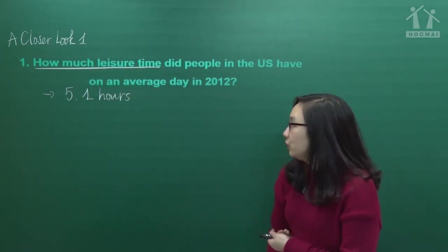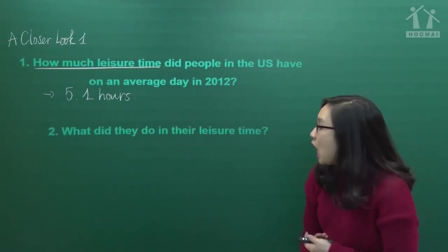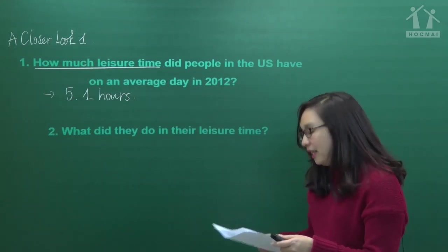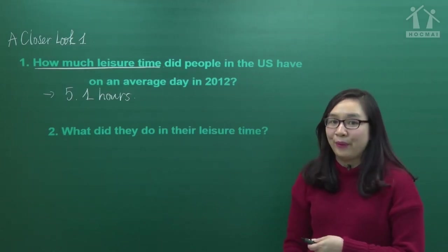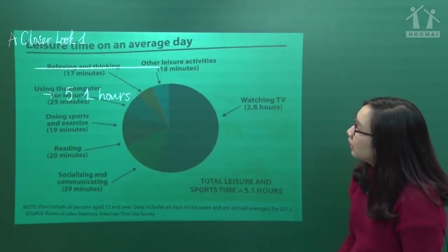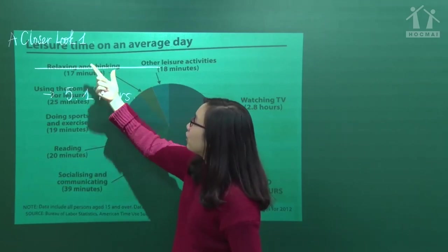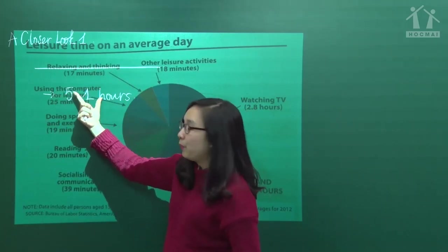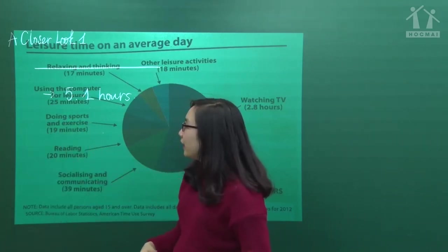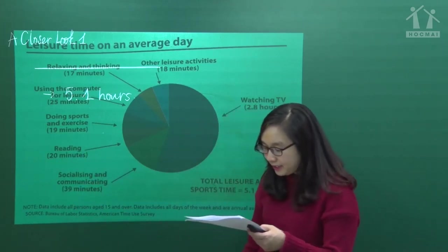Question 2: what did they do in their leisure time? - Họ làm gì vào thời gian rảnh rỗi của họ? Vậy thì các bạn sẽ phải liệt kê toàn bộ các hoạt động trong biểu đồ. Chúng ta xem lại: relaxing and thinking - thư giãn và suy nghĩ; using computer - sử dụng máy tính; doing sport and exercise - tập thể dục và thể thao; reading - đọc sách; socializing and communicating.